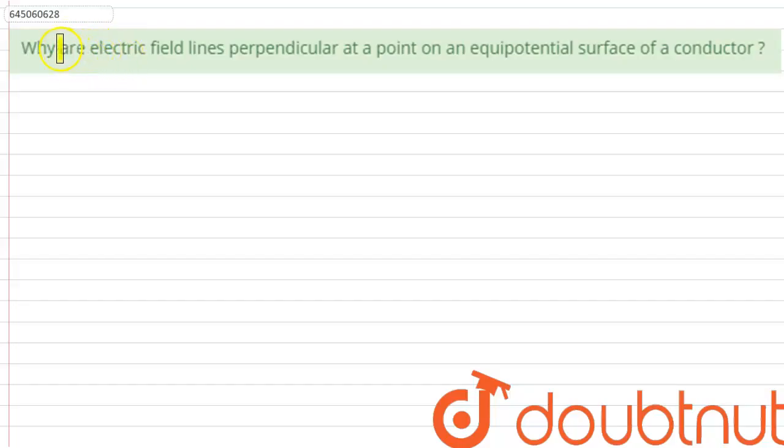Hello everyone. Why are electric field lines perpendicular at a point on an equipotential surface of a conductor? So the question is asking us to find out that why are electric field lines perpendicular at a point on the equipotential surface of a conductor?